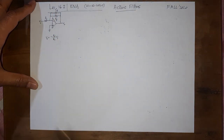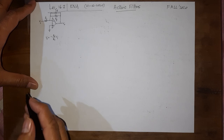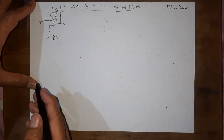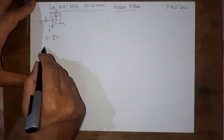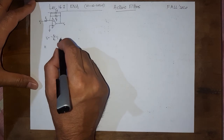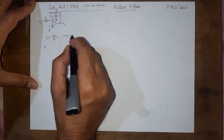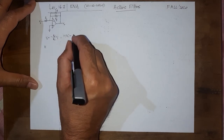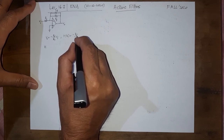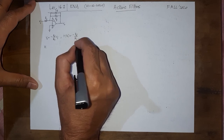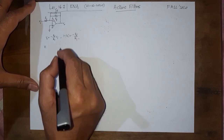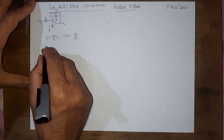Now if we have a capacitor in the feedback path, let us say this is Cf, and if you try to solve this, you will see that the transfer function in this case would be equal to minus Rf over R1 — this is the inverting amplifier configuration.